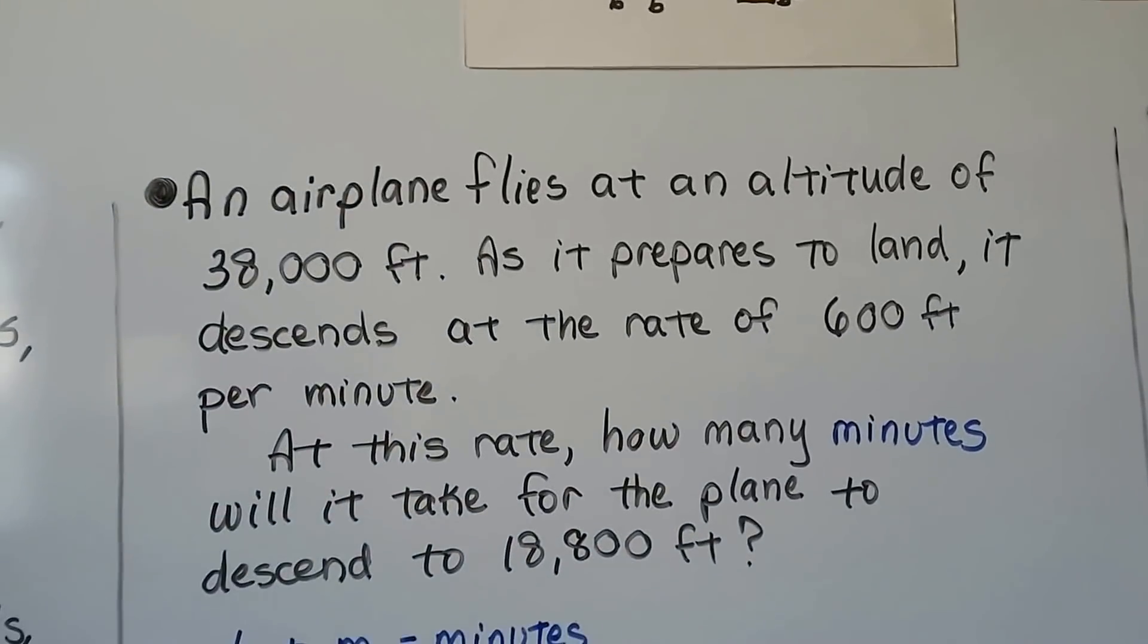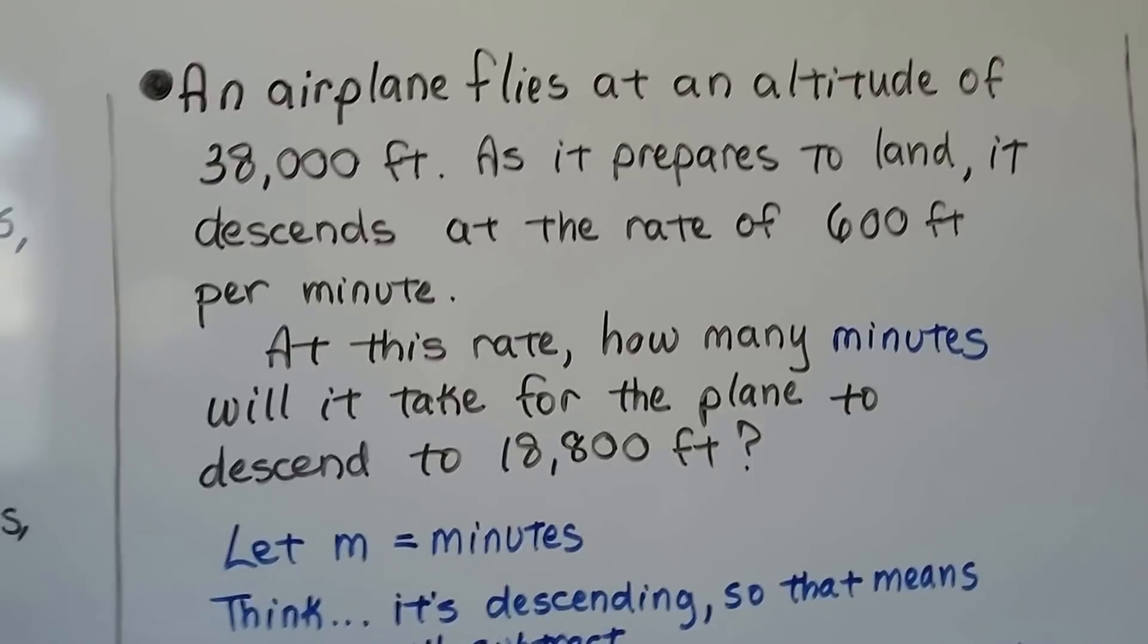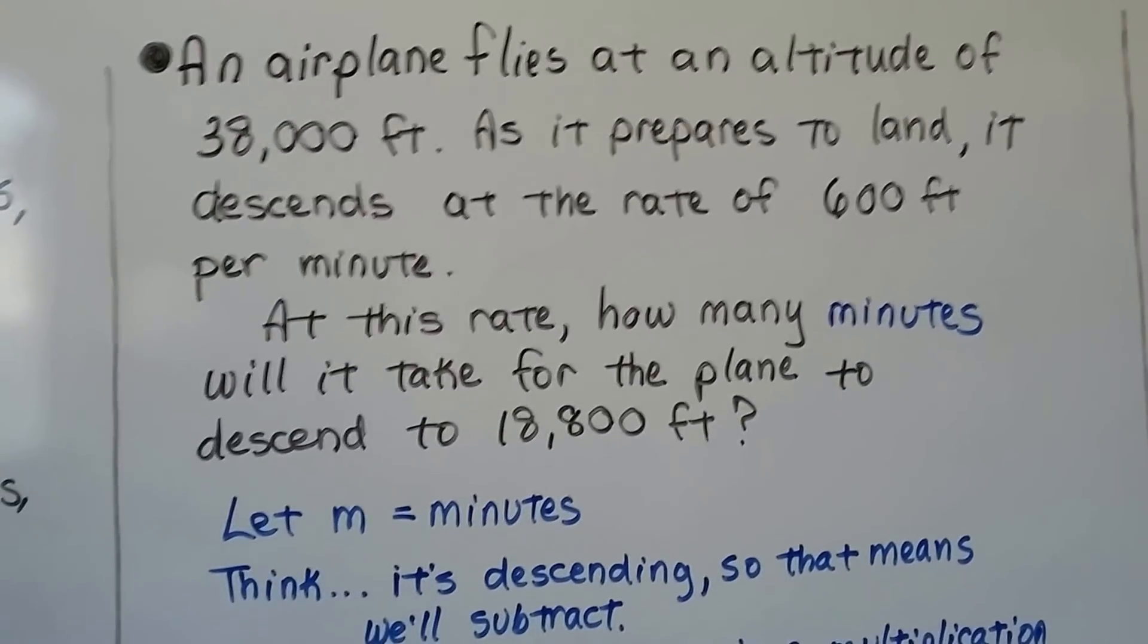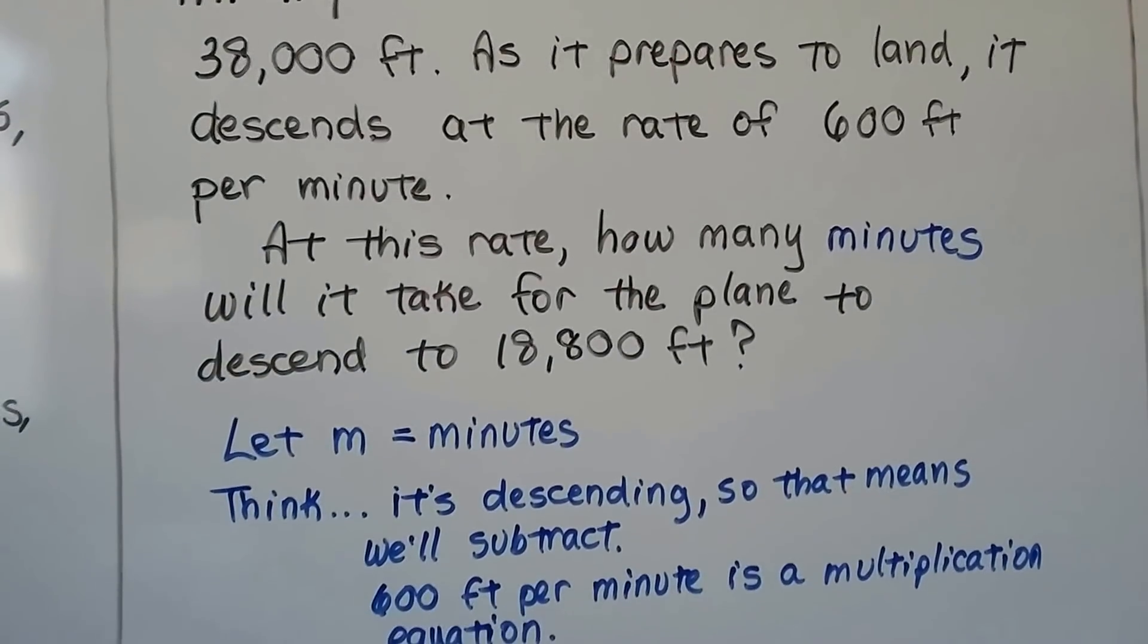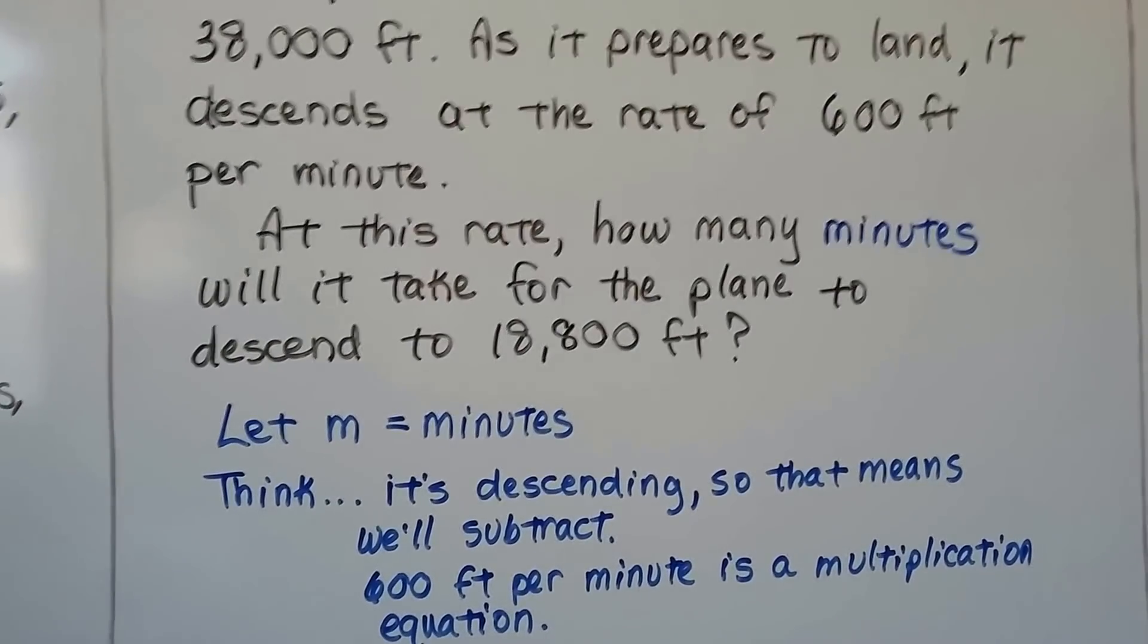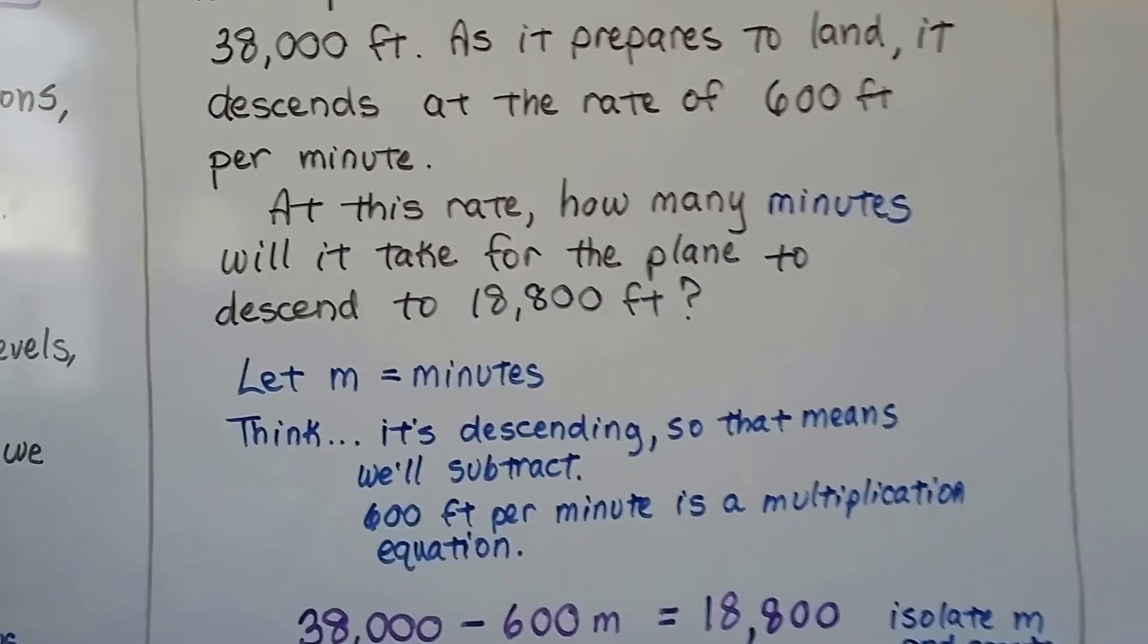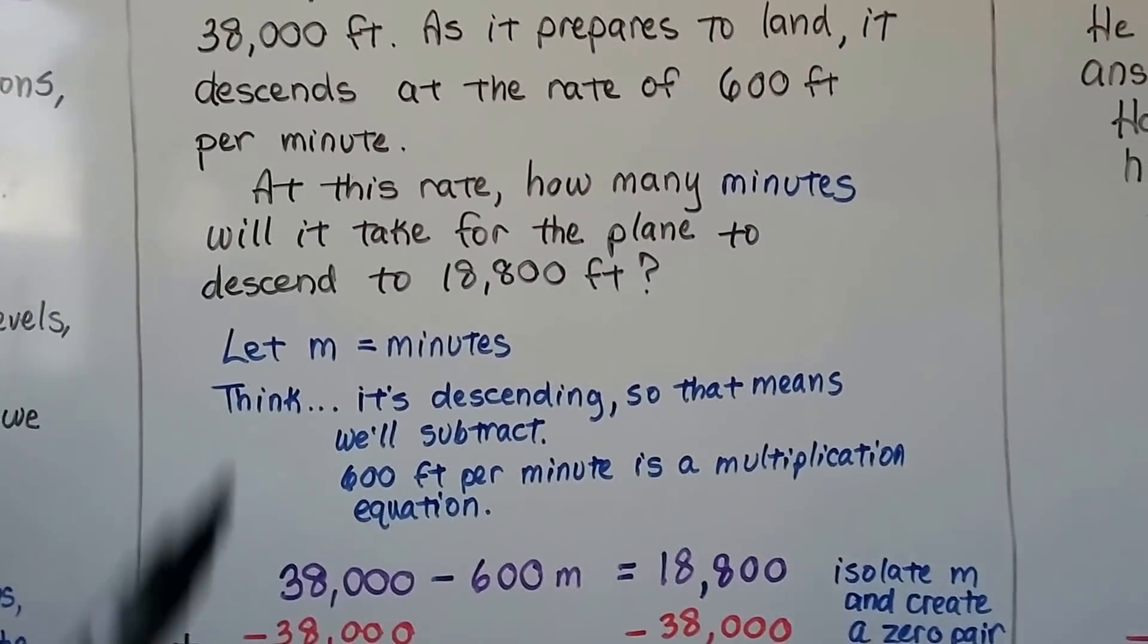An airplane flies at an altitude of 38,000 feet. As it prepares to land, it descends at the rate of 600 feet per minute. At this rate, how many minutes will it take for the plane to descend to 18,800 feet? We're going to let m equal minutes. That's what we're trying to find.